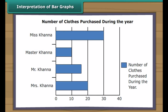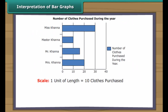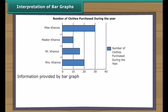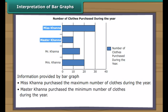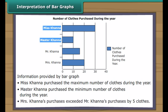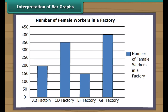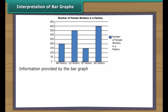Interpretation of bar graphs: A bar graph is a representation of data graphically with the help of horizontal or vertical bars. Bar graphs are easier to draw than pictographs. Look at this horizontal bar graph — the thickness of bars and the gap between them are identical. It shows clothes purchased by members of the Khanna family during the year. One unit of length represents 10 clothes. Miss Khanna purchased the maximum number; Master Khanna purchased the minimum. Mrs. Khanna's purchases exceeded Mr. Khanna's by 5 clothes.